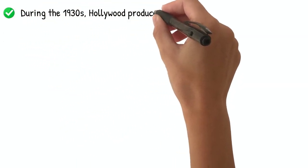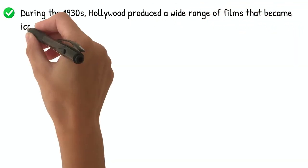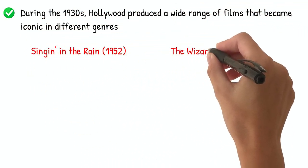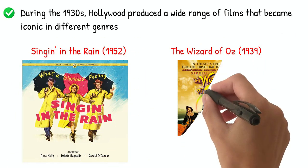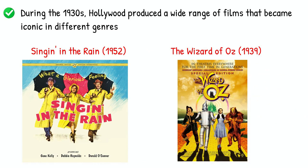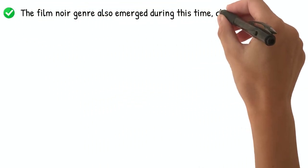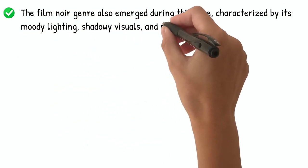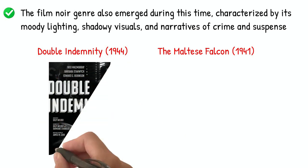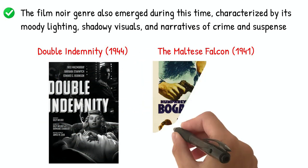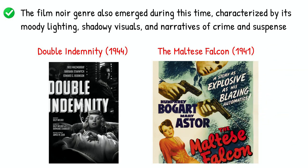During the 1930s, Hollywood produced a wide range of films that became iconic in different genres. Musicals such as Singin' in the Rain (1952) and The Wizard of Oz (1939) showcased elaborate song and dance numbers and became beloved classics. The film noir genre also emerged during this time, characterized by its moody lighting, shadowy visuals, and narratives of crime and suspense. Examples include Double Indemnity (1944) and The Maltese Falcon (1941).